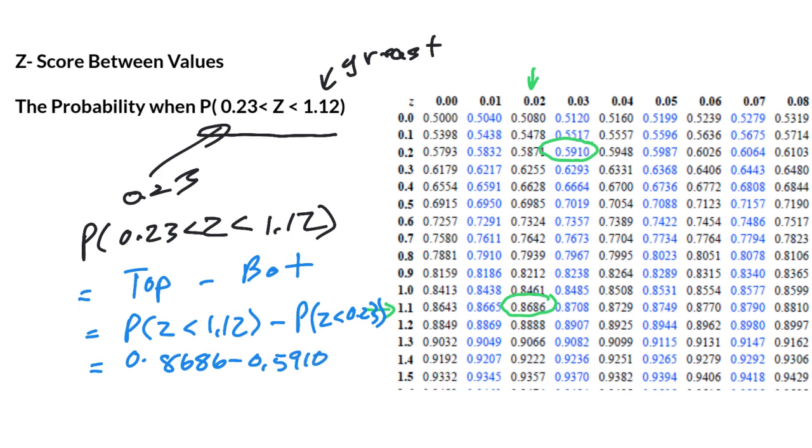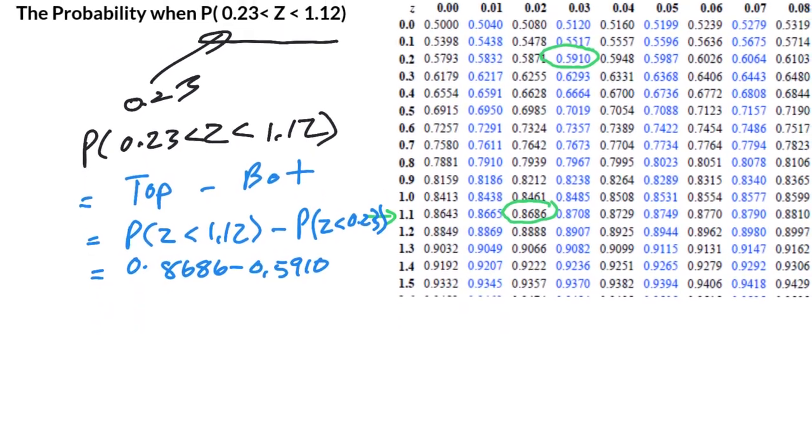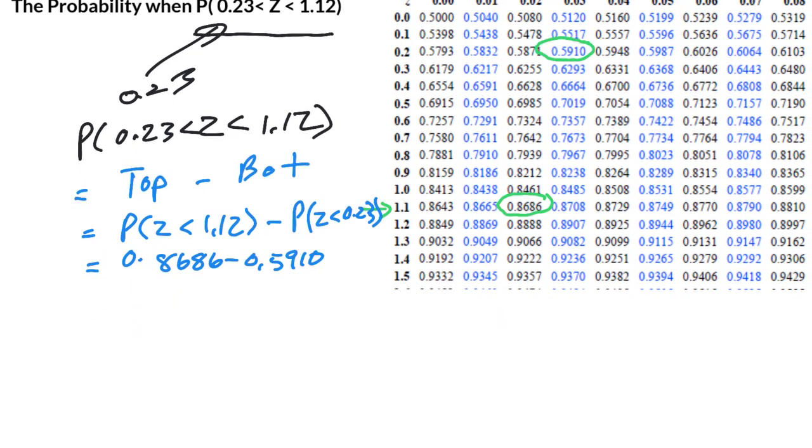Now, in doing so, what this allows us to do is it allows us to simply just subtract to get the area underneath the curve in this case. So now you end up with this answer, which gives us 0.2776, which is approximately 28%. And that's it.